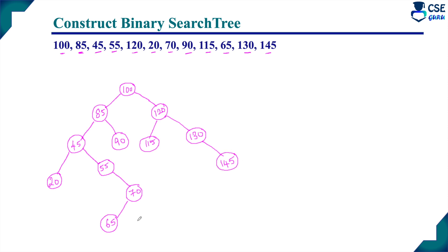Now we have completed the construction of the binary search tree for the given elements. Whenever we encounter a new element, compare it with the root node. The first element is considered as the root node. If lesser, go to its left sub-tree and compare at every level; attach at the right place. If greater, attach as a right sub-tree element. Every sub-tree must satisfy the binary search tree property — left sub-tree elements smaller than the root, right sub-tree elements greater.